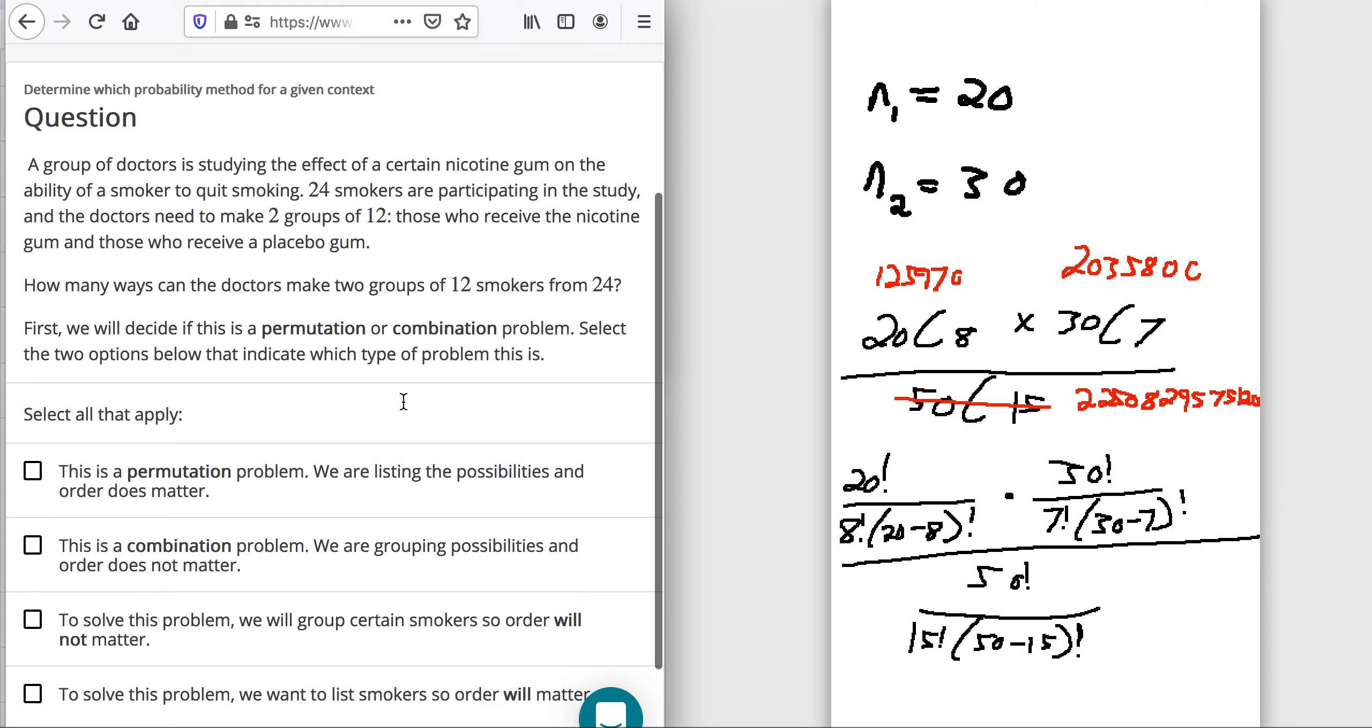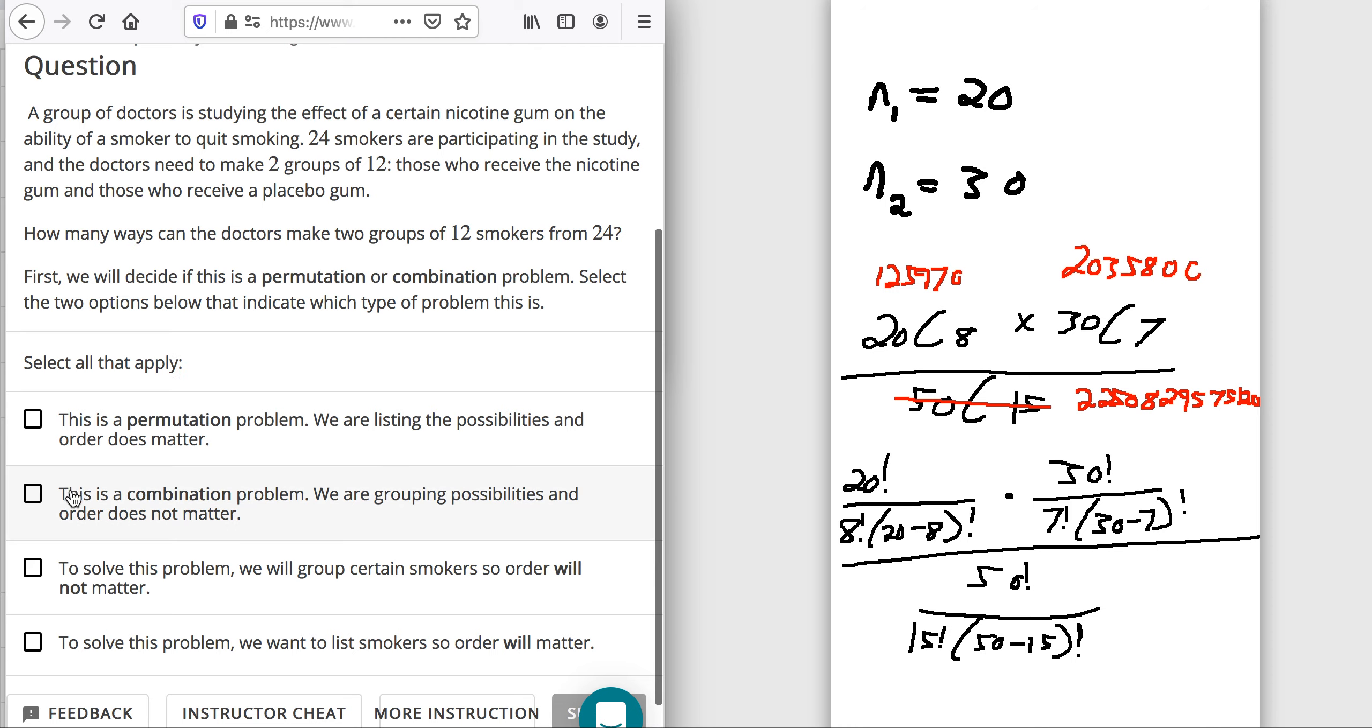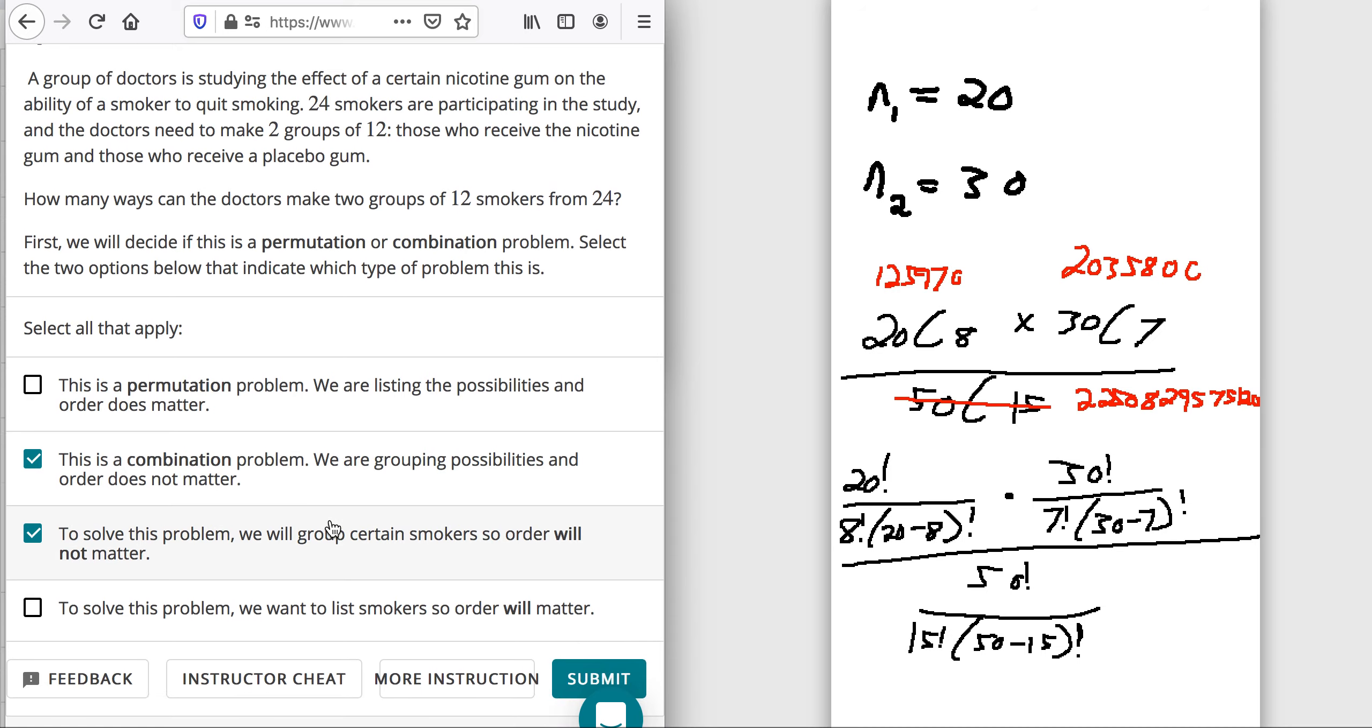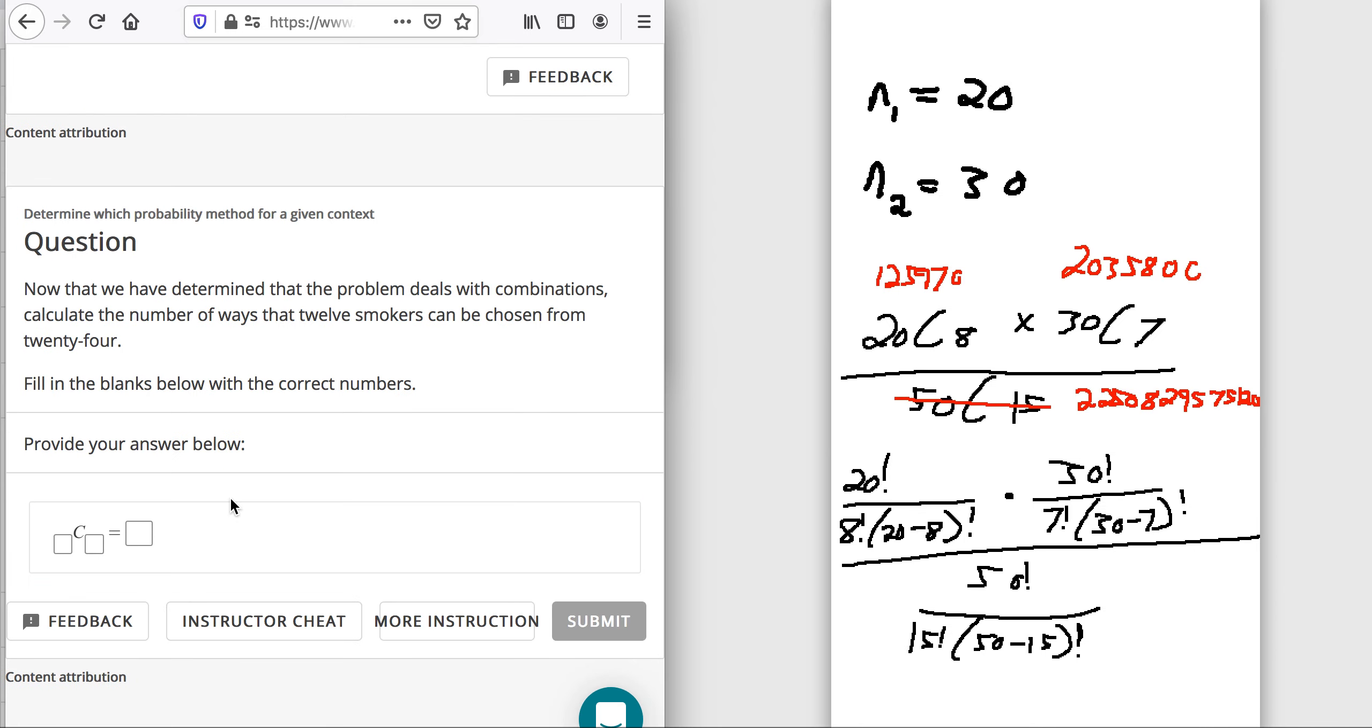It's a permutation problem if the order matters. So, we would never select this option. Permutations are when the order matters. Combination problems are when the order doesn't matter. That formula we just used is a combination formula. Normally, we use that when the order does not matter. To solve this problem, we will group certain smokers so order will not matter. That's true. The first smoker doesn't get anything different than the last smoker put in a group. So, it's just those two. Order doesn't matter for this grouping.